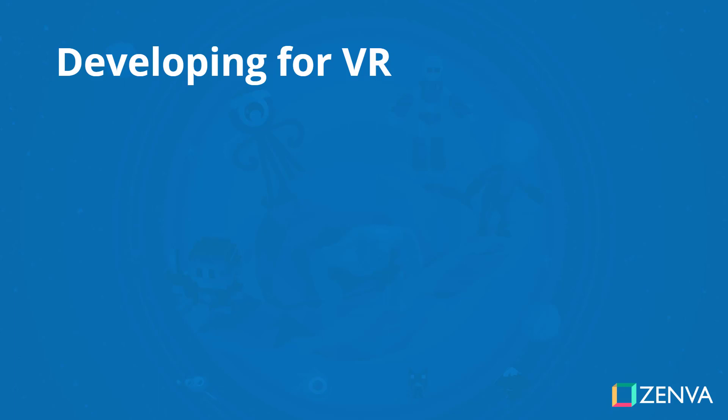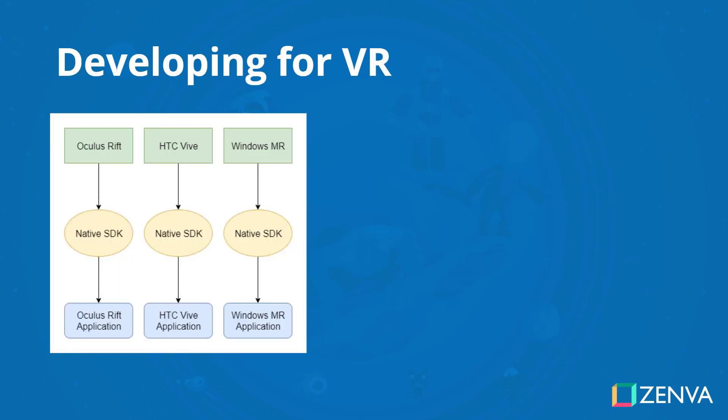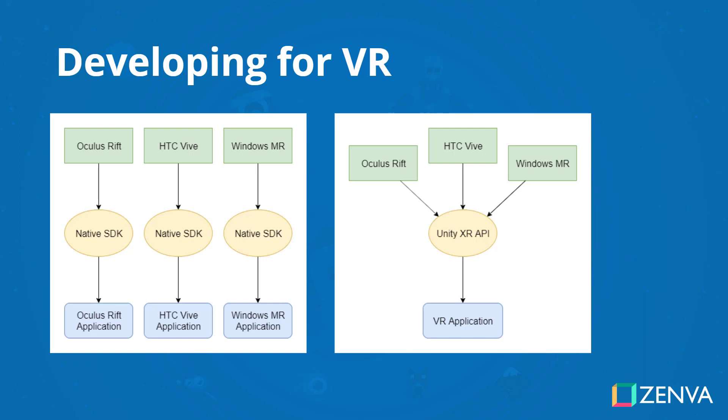Next up, developing for VR. We're going to be developing our VR application inside of Unity, and Unity is probably the best platform for this. If you wanted to make an application for all the different headsets, the problem is that not all devices support each other. With the Oculus Rift you'd need the Oculus SDK, with the Vive you'd need the Valve SDK, and with Windows MR you'd need the Windows SDK. But the good thing about Unity is we don't have to worry about specific devices. We just track VR controllers, because Unity handles all of this behind the scenes in the Unity XR API.